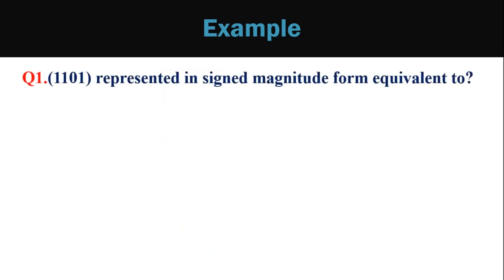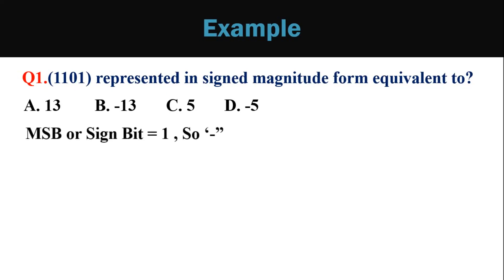Now a question: the 4-bit number 1101 represented in sign magnitude form is equivalent to 13, minus 13, 5, or minus 5? Here the 4-bit number 1101 is a signed number and we have to find the decimal equivalent. The MSB or sign bit is 1, so the number is negative. The remaining 3 bits 101 equal 5 in decimal. So the answer is minus 5, option D.